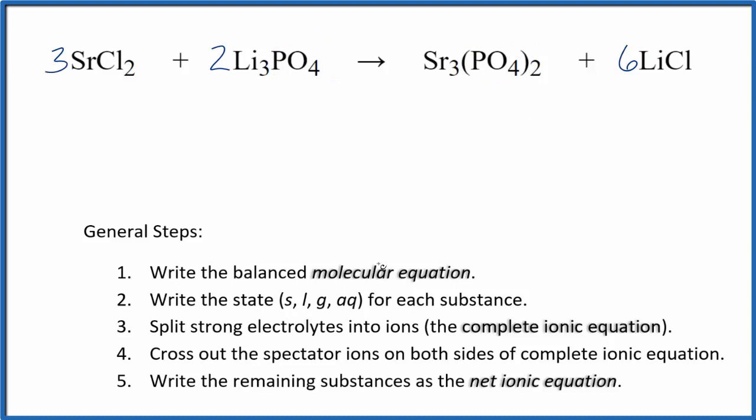Now we can do the states. We want to write the state for each substance. That's going to look like this. So compounds with the chloride ion, they are very soluble. And compounds with lithium here. Lithium compounds, very soluble. So these are all going to be soluble.